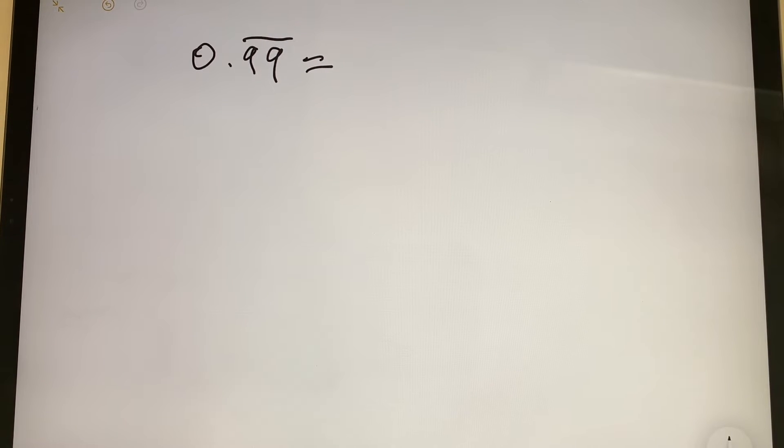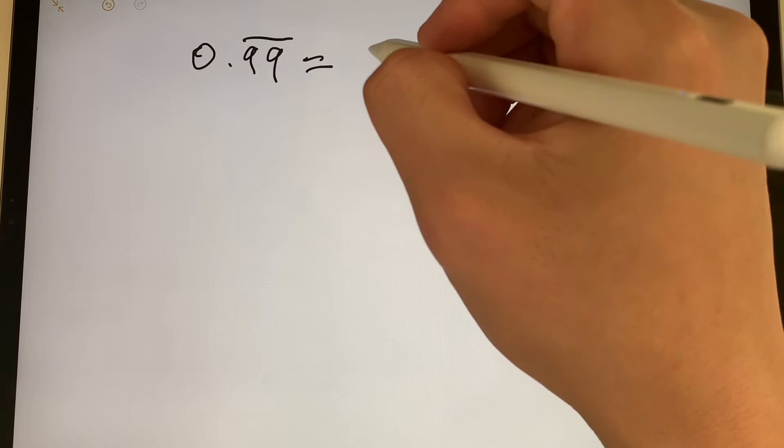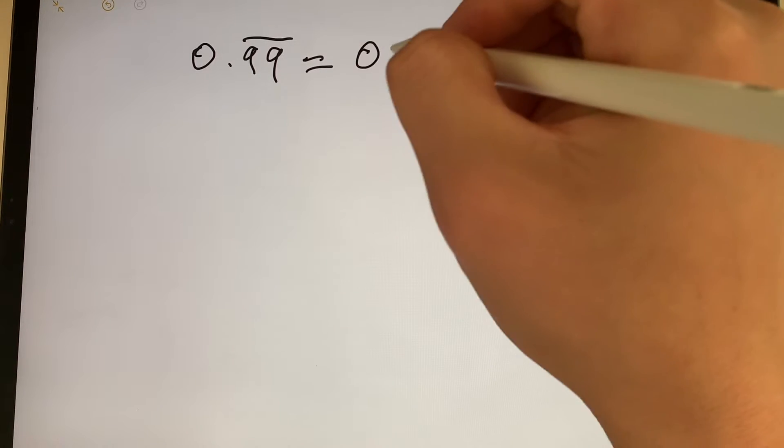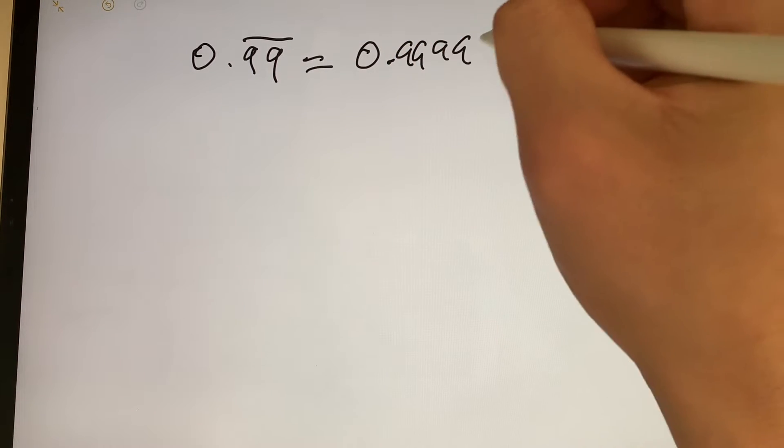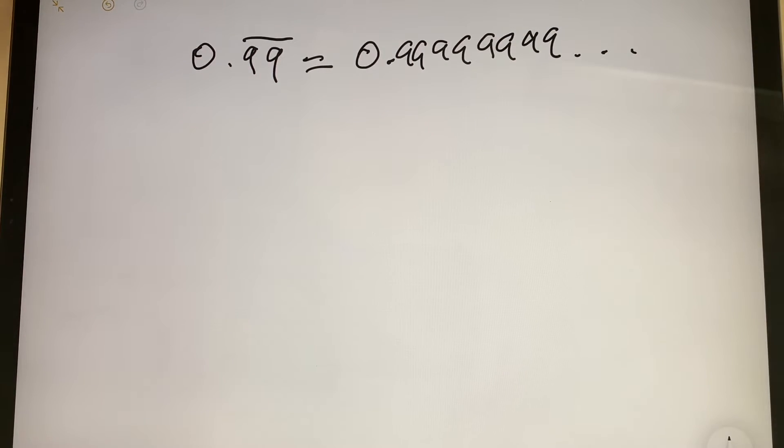If you guys know what the bar means, it means it's a repeating decimal. All it means is that this 99 repeats infinite times. So this means that this is equal to 0.99999999, all the way up to infinite nines.